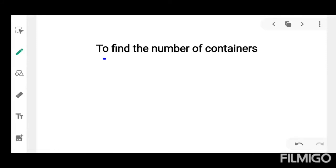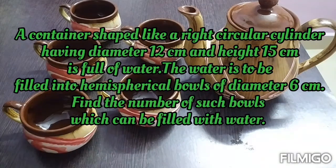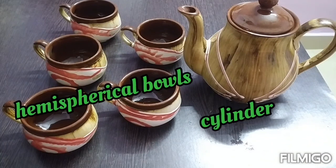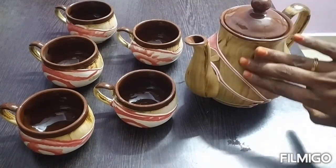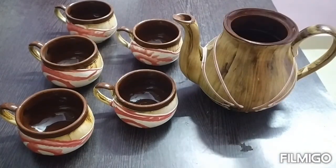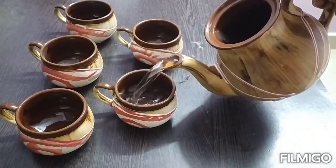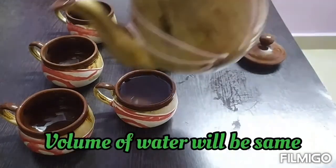Our next subtopic is to find the number of containers. We will see this through an example so that you will get a clear idea. A container shaped like a right circular cylinder having diameter 12 cm and height 15 cm is full of water. The water is to be filled into hemispherical bowls of diameter 6 cm. Find the number of such bowls which can be filled with water. Let us consider this to be a cylinder and these to be hemispherical bowls. This cylinder is full of water. We are just going to fill this water into these bowls and we will find out the number of bowls. Whatever the container, the volume of water will remain same, whether it is a cylinder or into the bowls. So the volume of water will be same.